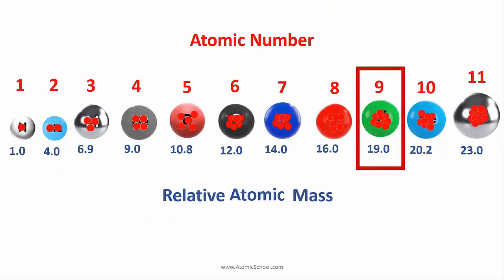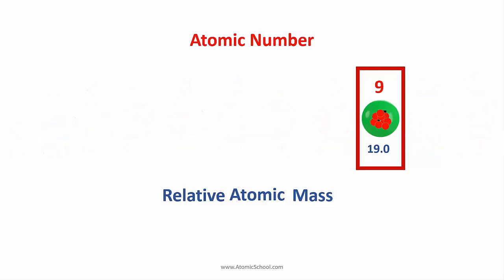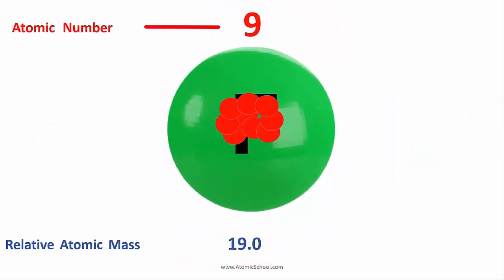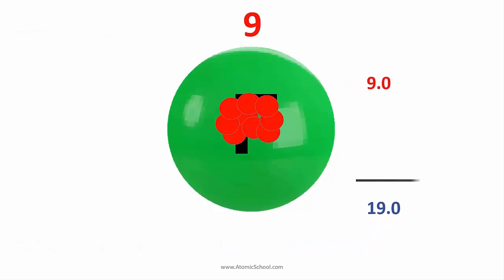How about fluorine, atomic number 9? It's got 9 protons in its nucleus and its total mass is 19, so it must have 10 neutrons in its nucleus.